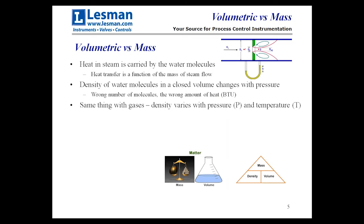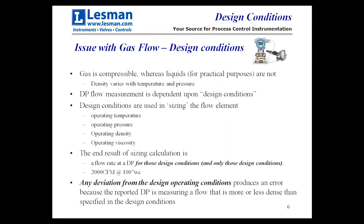The same thing happens with gases — density varies with pressure and with temperature. Gas is compressible, as is steam, but liquids are not, so we're not really looking at this technology for liquids. When you go to design a DP flow measurement, you design it to what they call design conditions. Design conditions are used to size the flow element and correlate the design of that flow element to what it's going to read back. Design conditions include operating temperature, pressure, density, and viscosity — for example, operating at 160 degrees F at a pressure of 50 PSI.